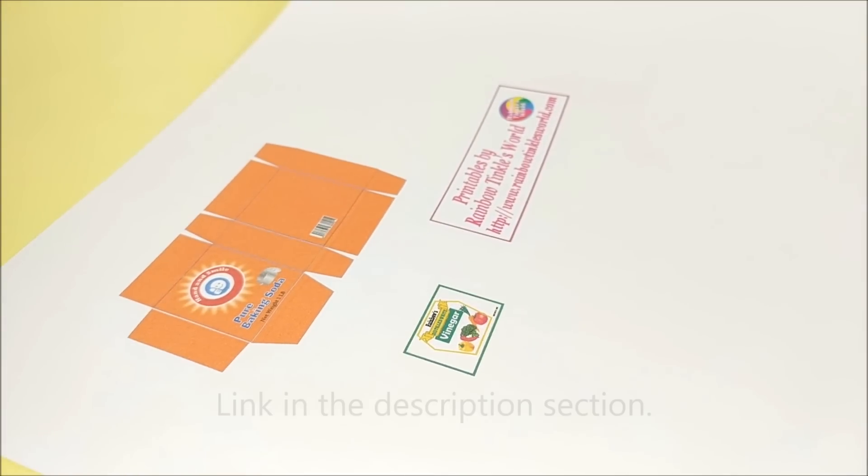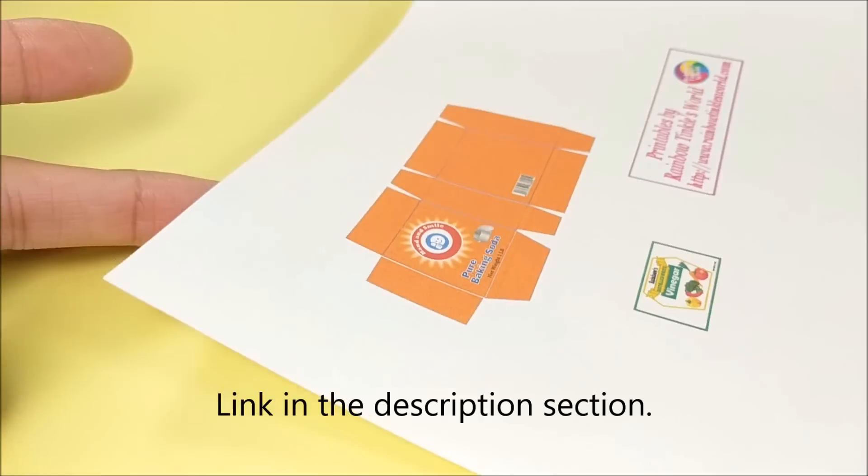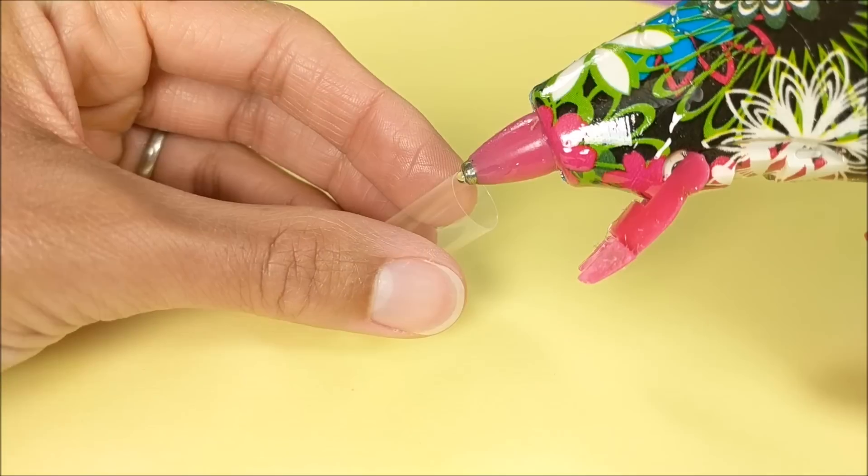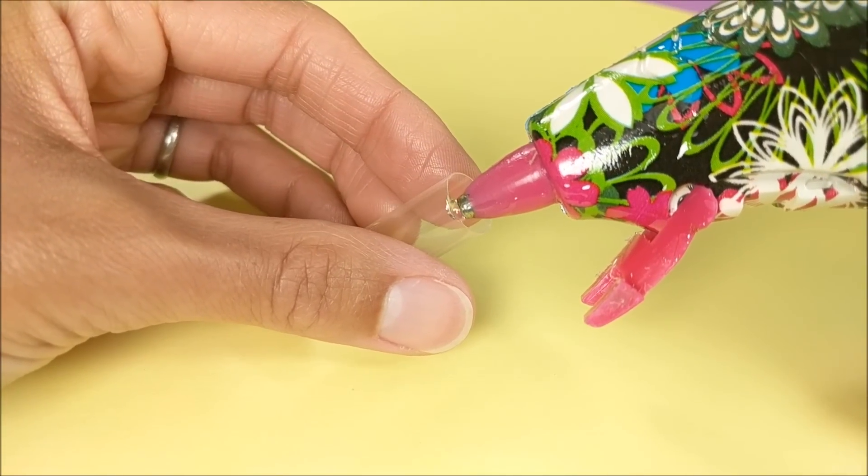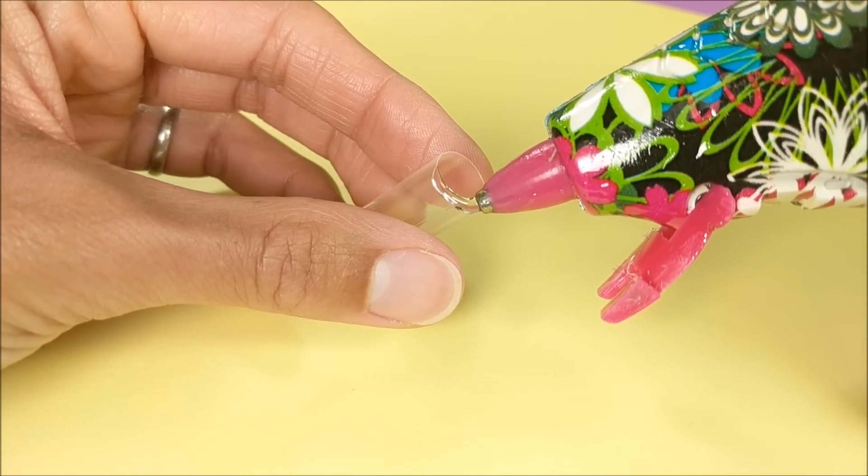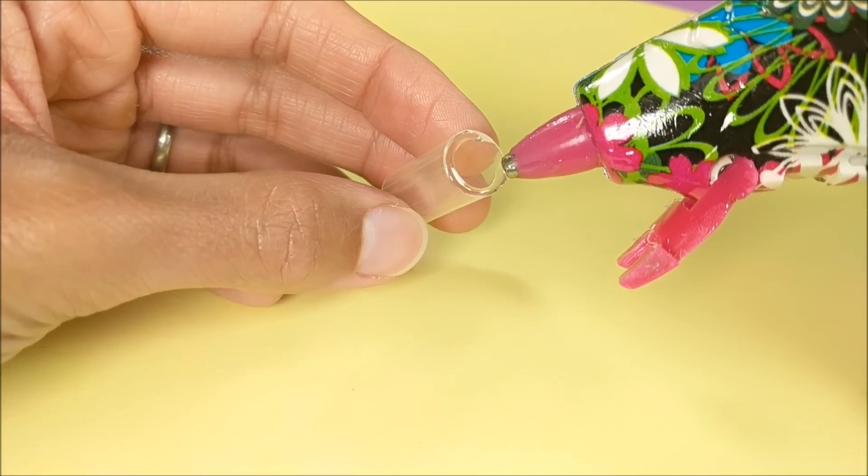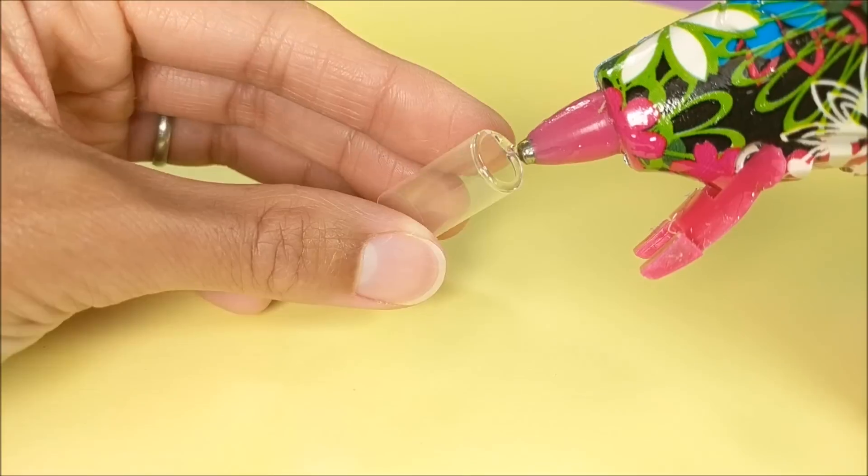So I print the baking soda box and vinegar label on paper, cut out and assemble my box. For the vinegar I'm using a bubble tea straw which I cut down to about an inch. To shape the top of the bottle I'm carefully using hot glue, going around the edges slowly, gradually going toward the center but leaving a hole in the middle.